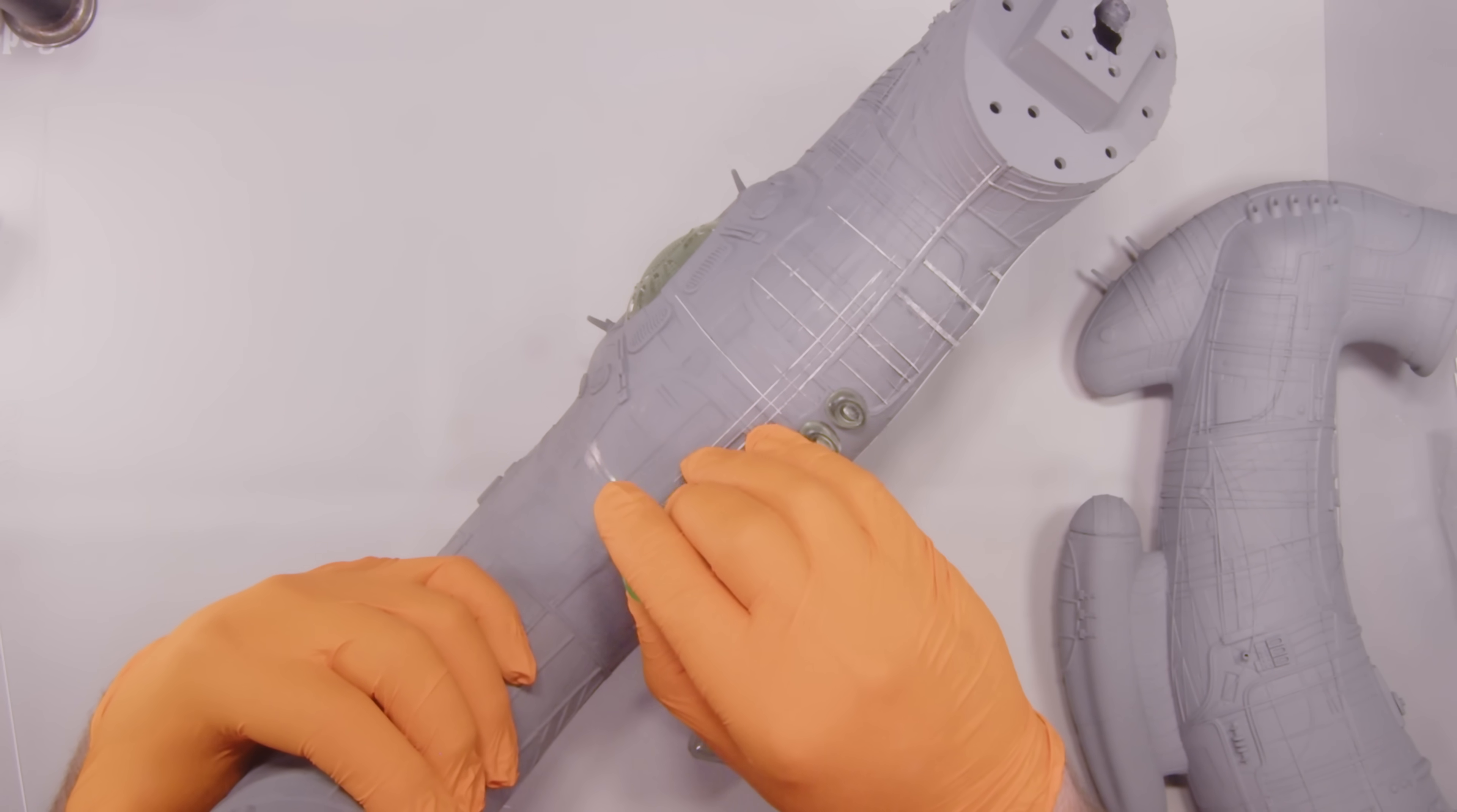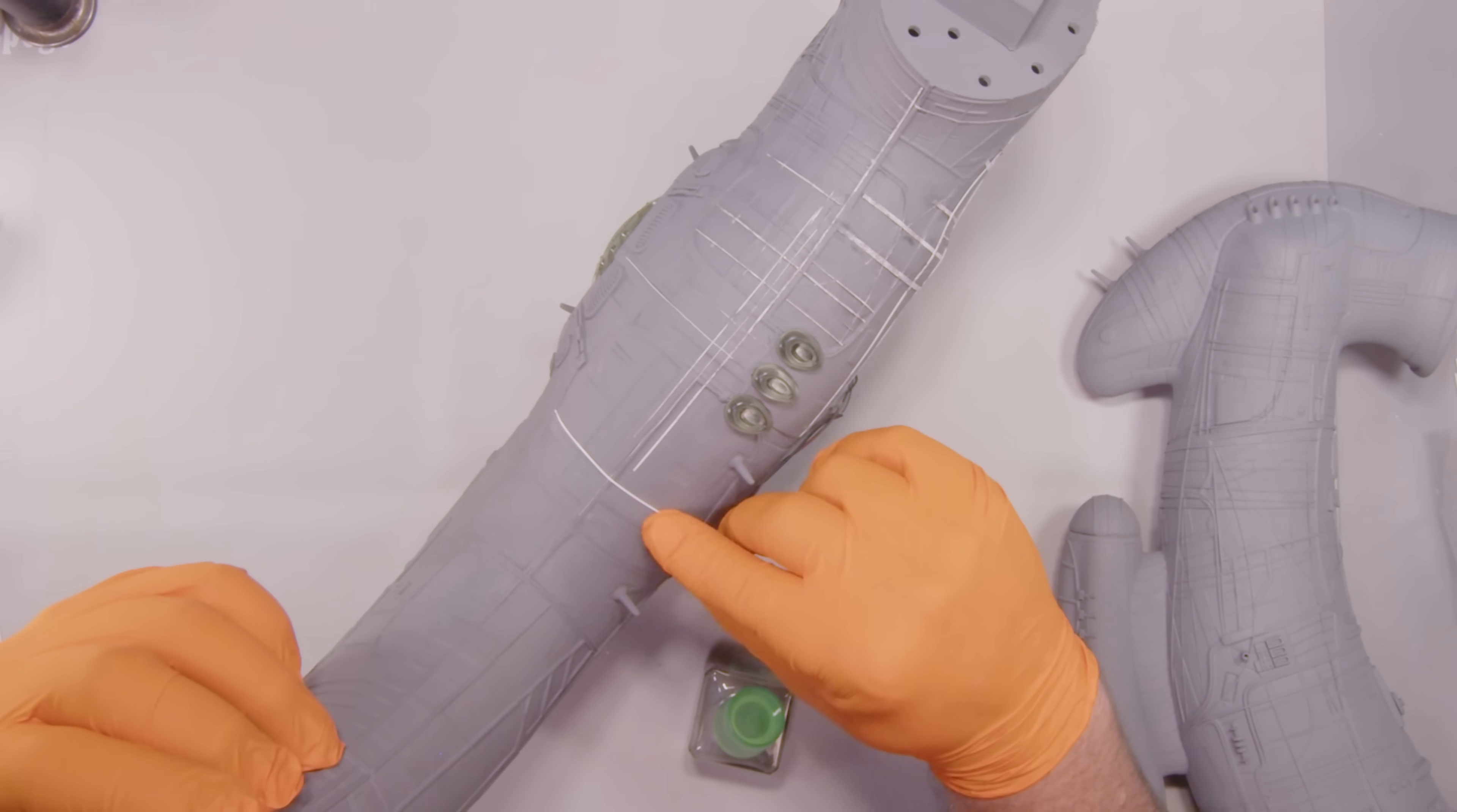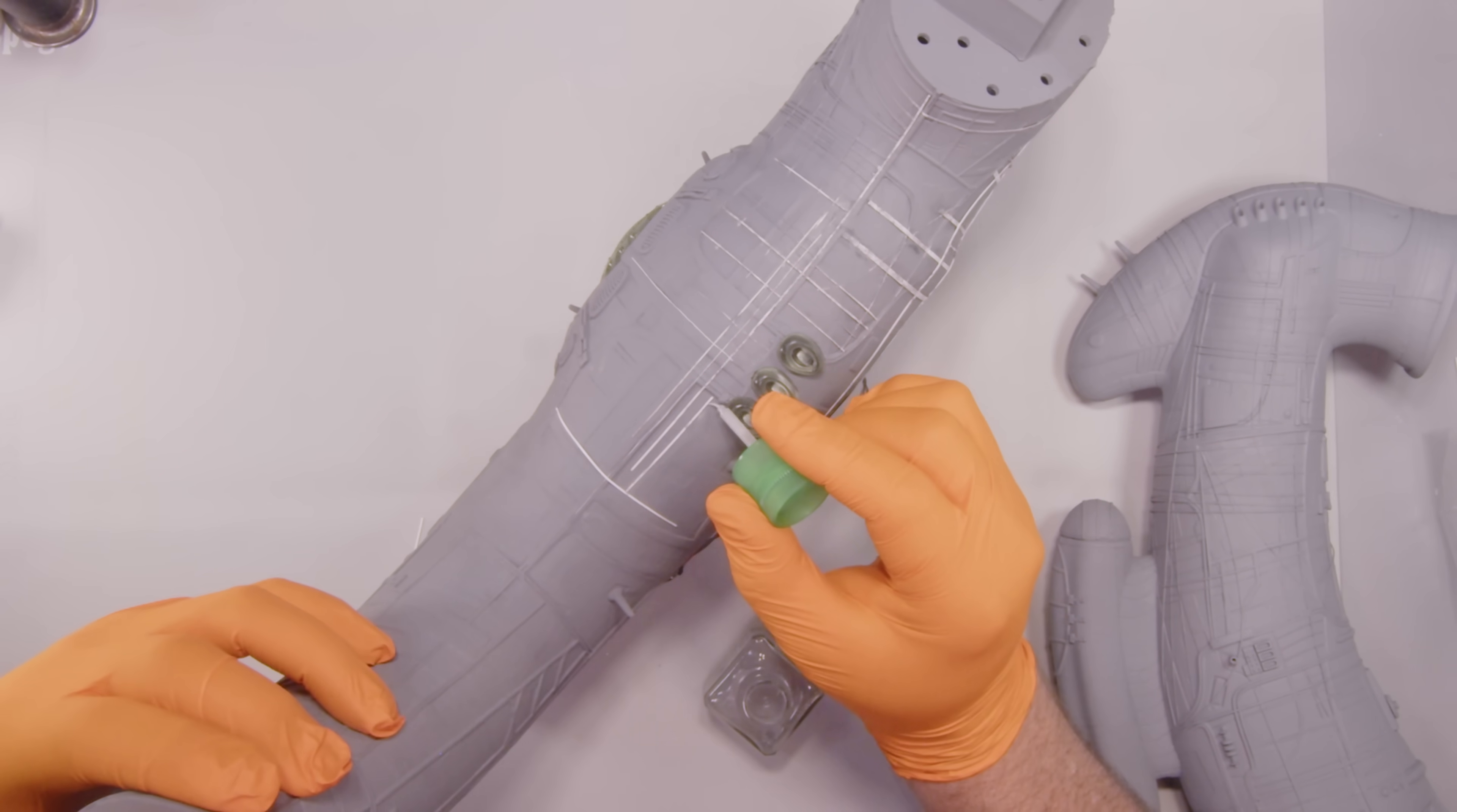I also added some thin styrene strips to the areas I knew were going to benefit from having extra detail added. Because we enlarged the model two and a half times the intended print size, it was a good idea just to add a little bit of extra detail in there to help sell the scale a bit better.